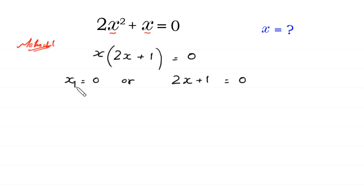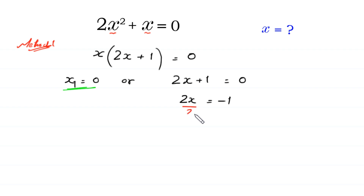The first value is x equals zero — this is the first solution of this equation. From the second factor, we move the plus 1 to the right side: 2x is equal to negative 1. We divide both sides by 2, this 2 cancels with this 2, and we get the value of x: negative 1 over 2.